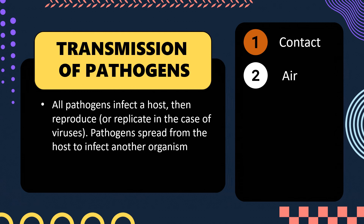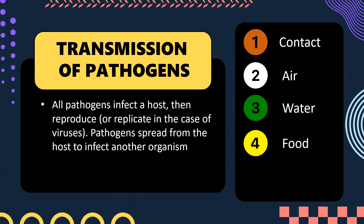Another route is water — pathogens can be present in water, and if a healthy person drinks that contaminated water, the pathogens will enter their body. Similarly with food — if someone eats food contaminated by pathogens, they will also get those pathogens inside their body.